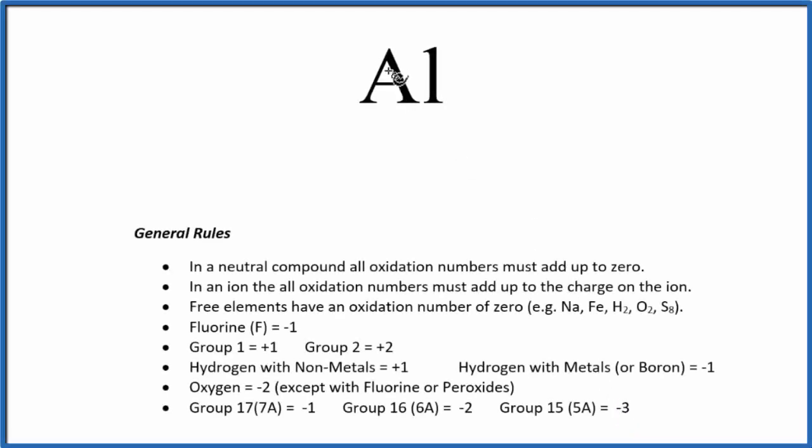In this video we'll look at the oxidation states, or oxidation number, for aluminum. Just looking at aluminum, we can see this is what we call a free element, it's just Al. If we have a free element, the oxidation number is going to be zero. So the oxidation number for aluminum by itself is zero.